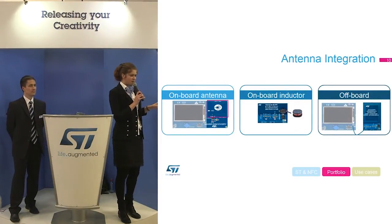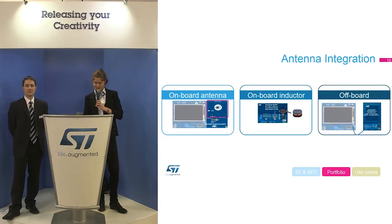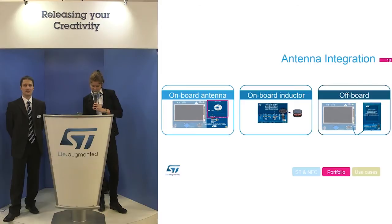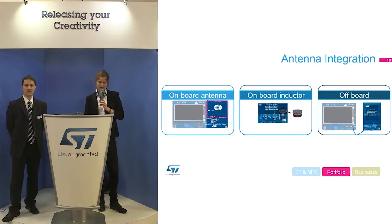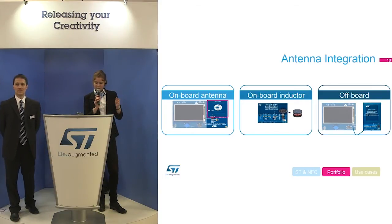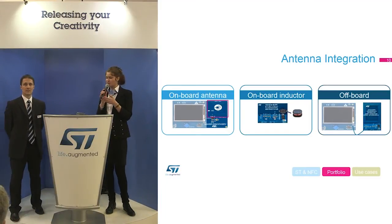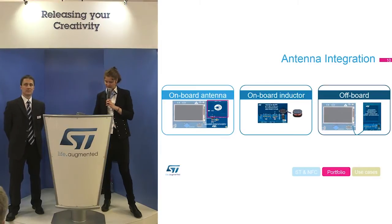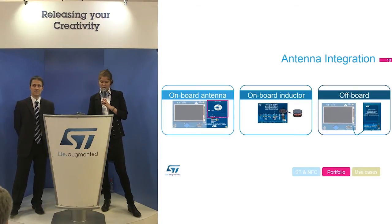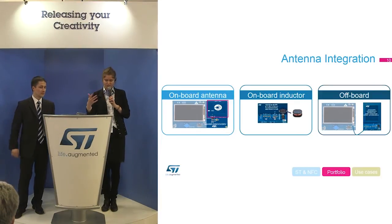Regarding the antenna, there are three different ways to integrate it. The first is an onboard antenna on your PCB — this is costless. If you don't have enough space on the PCB, you can do a ground antenna around your PCB so it won't be visible inside your application — it is transparent. The second option is an onboard inductor; since it has ferrite, it works well when you have metal nearby, although the range will be smaller. The third option is an off-board antenna, for example using a flexible PCB.